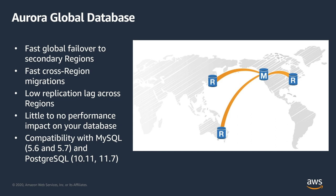When we build our global database or our global infrastructure, we create multiple regions. US has multiple regions, Africa has regions, Asia has multiple regions, Europe has regions, and more. Essentially what this feature lets you do is it lets you take your primary database in a region and replicate it across multiple regions across the globe.